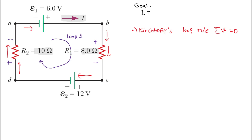We have to be very careful about signs in Kirchhoff's Loop Rule. At Loop 1, let's examine each component. Starting with battery E1, the current flows to its negative terminal, so the sign is negative: we write minus E1.